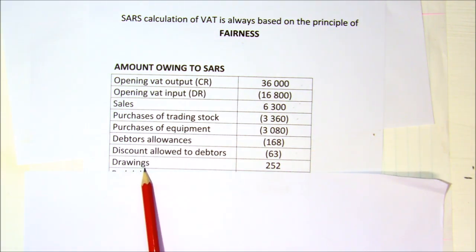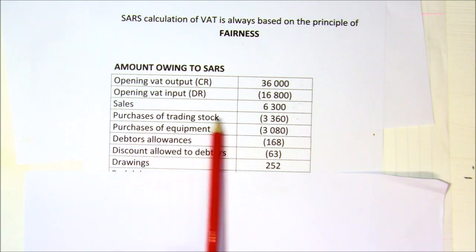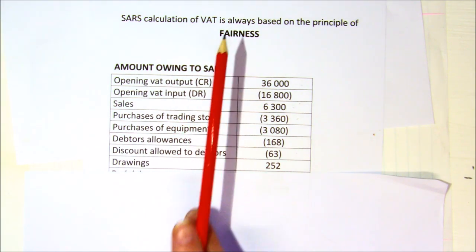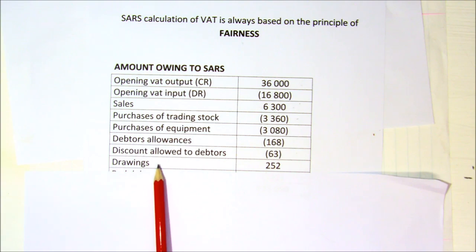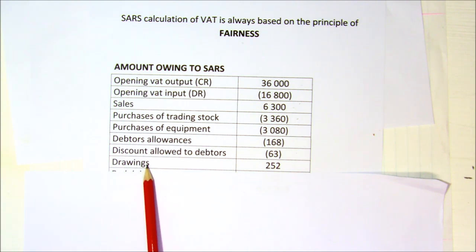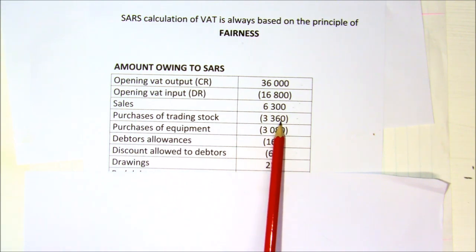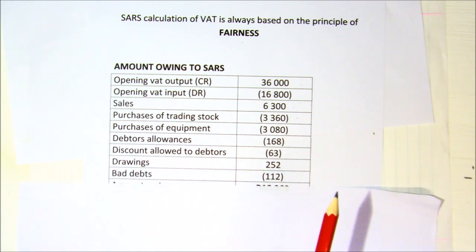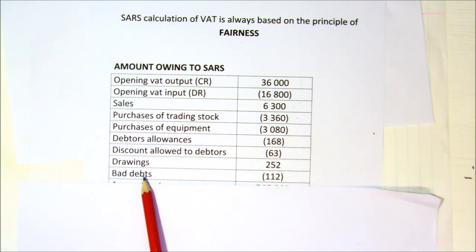You then move on to drawings. This is when the owner takes goods or stationery for his own use. Remember, you would have claimed back VAT when you bought the goods for the business — but fairness comes in here. If the owner is taking goods for his own use, it's no longer a business cost. The business entity rule always tells us to keep the owner and business affairs separate. So if the owner takes the goods for personal use, you cannot claim that VAT back, and because you claimed it back before as a minus, you now actually owe that money to SARS.